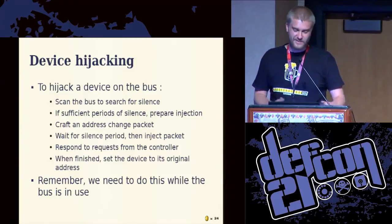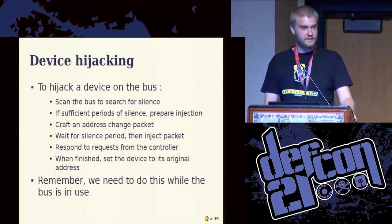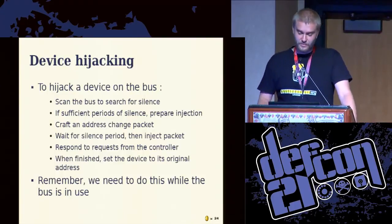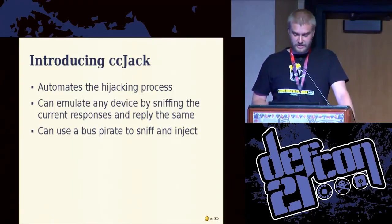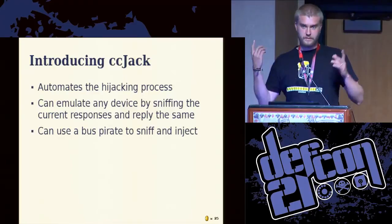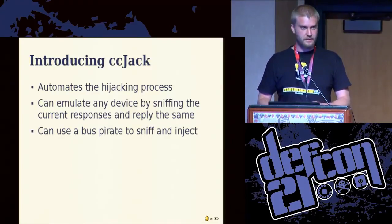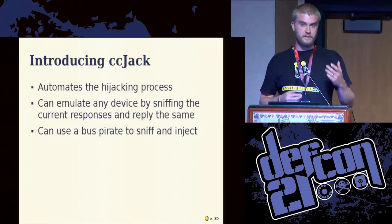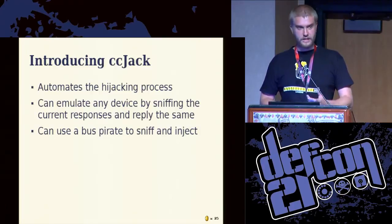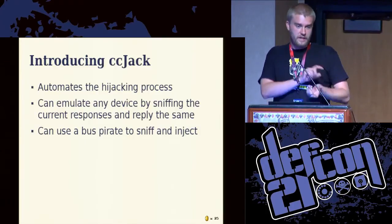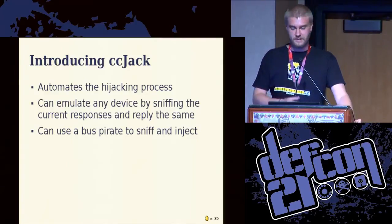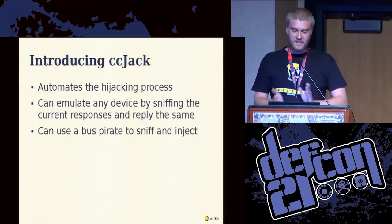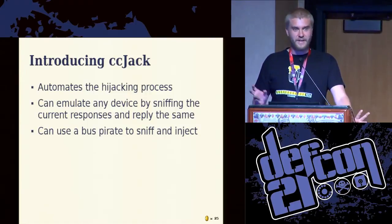When you've finished, you can just set the address back so the device is at its old address and you can leave and everything works. So I created a tool called CC Jack which automates the hijacking process. It can emulate a device — it scans the bus, reads every packet that passes, and for each packet directed to the device you want to hijack, it records the request and the response. As soon as it hijacks the device, it starts responding with the last response the actual real device used to send. Normally it will be pretty much transparent, so the main board won't fire an alarm. It also uses a Bus Pirate to sniff and inject.